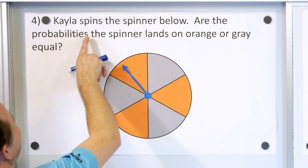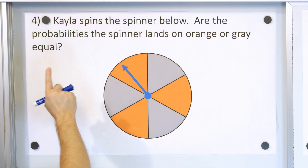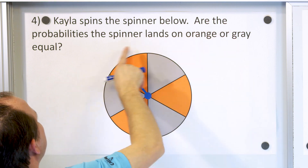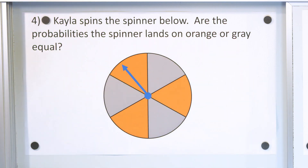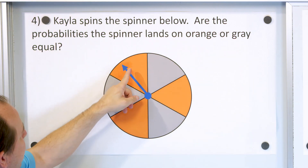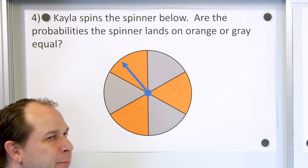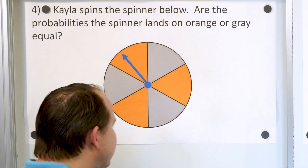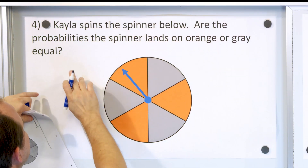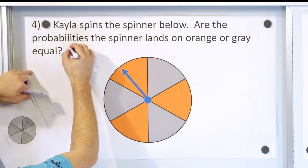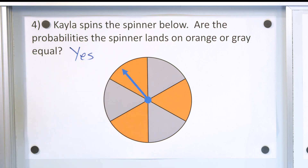Problem number four. Kayla spins the spinner below. Are the probabilities the spinner lands on orange or gray equal? Well, I have three possible outcomes of orange and three possible outcomes of gray. Because there are an equal number of spinner spaces that are orange and gray, you know intuitively that the probability of landing on either is the same. So you can actually answer the question without any math — yes, they are equal. Now let's dig a little deeper into why.